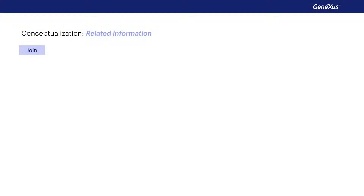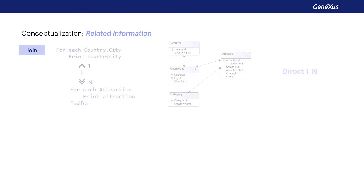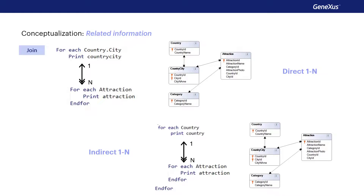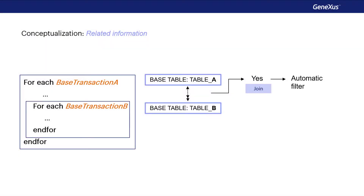We can distinguish two cases of one-to-many relationships between tables. The first is direct: the base tables of the external and nested foreach commands are Country, City, and Attraction respectively, linked by a one-to-many relationship. The second is indirect: the base tables are Country and Attraction, which do not have a direct one-to-many relationship, but do have an indirect one through the Country-City table — the base table of the first foreach command, Country, is included in the extended table of the nested foreach command's base table, Attraction. If no relationship exists, no filter would be applied and all records of the nested foreach command would be printed for every record of the external foreach command. This type of nested foreach command where no implicit relationship is found is called a Cartesian product.